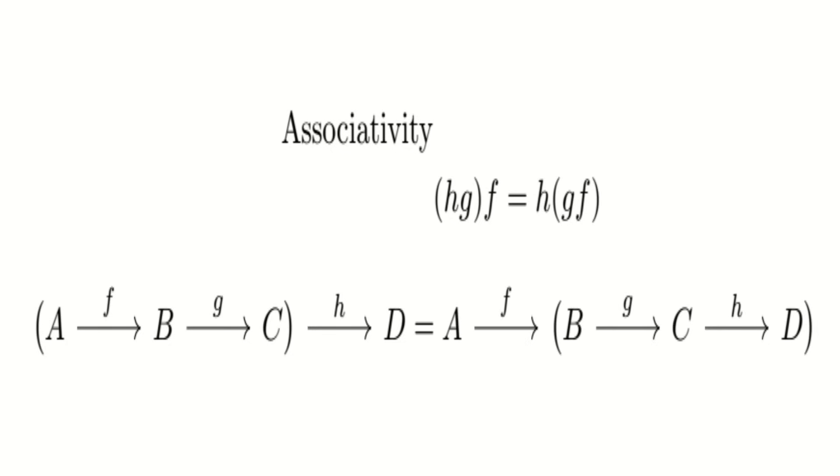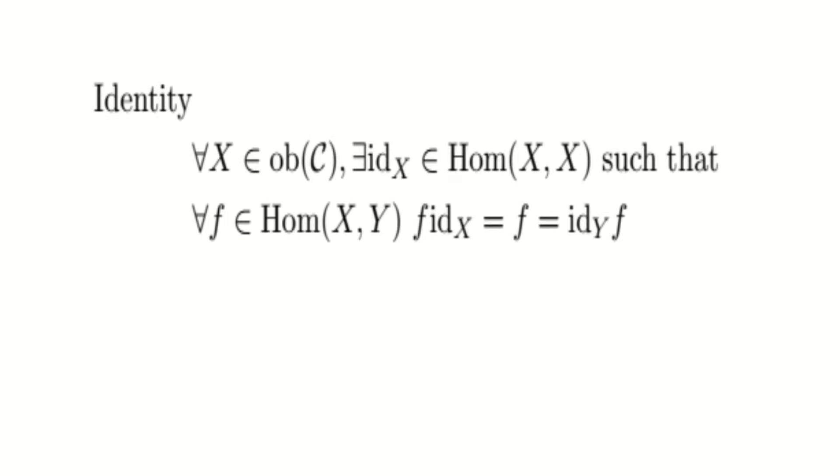Associativity means that if we have arrows composed first from the left, then they are equal to being composed first from the right, leaving us with no ambiguity. Identity just means that for each object, there is at least one arrow pointing to itself, being considered the identity arrow. Denoted I subscript the object.